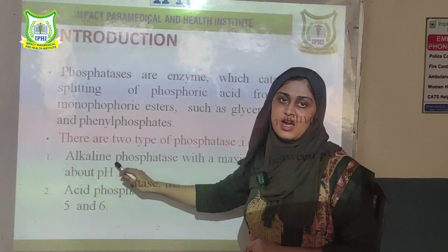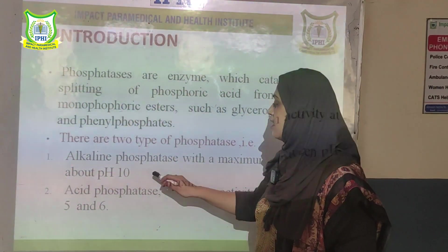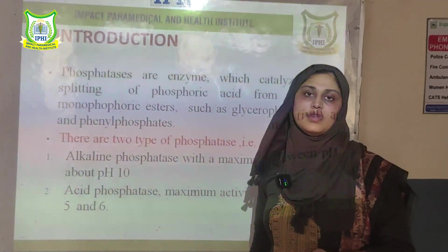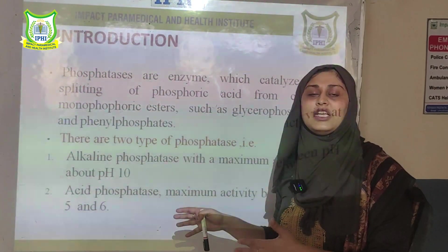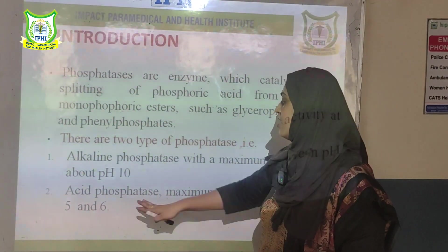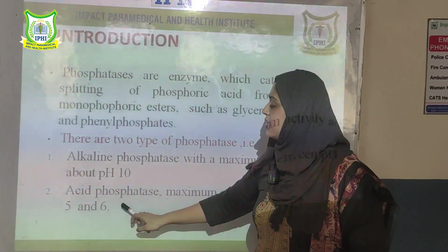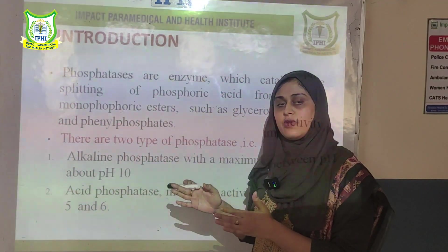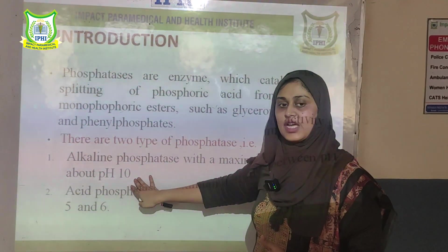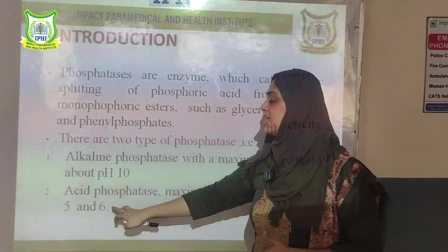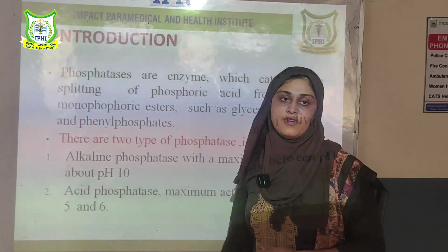Alkaline phosphatases are called alkaline because their working pH is near to 10, in the alkaline condition of pH 10 to 11. Acid phosphatase activity is in the range of pH 5 and 6, that is why it is called acid phosphatase.